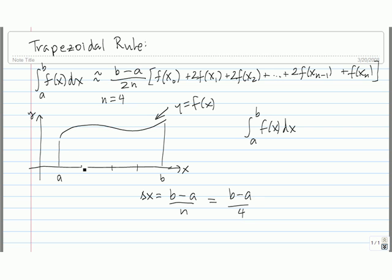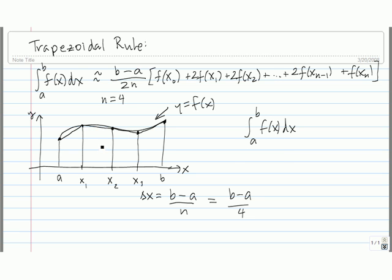The way we form our trapezoids is: we go to the first point x sub 1, draw a segment up to the curve, and connect it to f of a. Then we go to x sub 2, draw a segment up to the curve, and form another trapezoid. Then x sub 3, drawing a trapezoid by connecting to f of x sub 2, and our final trapezoid by connecting f of x sub 3 to f of b. So we can approximate this region using these 4 trapezoids.